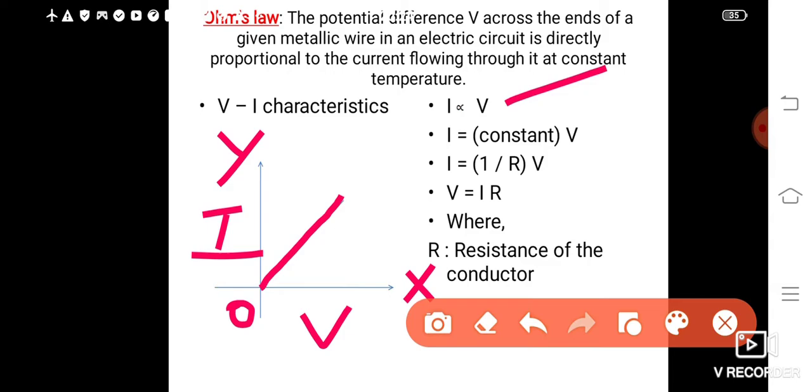Then, to remove the proportionality sign, we have to insert the constant here. That is, i is equal to constant into V. Then, in place of constant, here I am taking 1 divided by R. Then i is equal to 1 by R into V. Then V is equal to... This R goes to left side, then it becomes V is equal to IR.